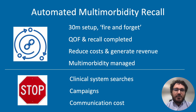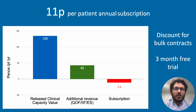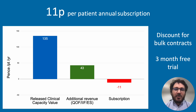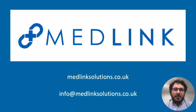All costs are included in the annual subscription. We're pleased to offer the fully integrated Medlink package to all EMIS clients for just 11p per patient annual subscription. Clinical capacity worth many times the cost is released, and that's not even taking into account the admin savings through recall automation. There is significant revenue potential, and our average users have a return on investment of over 13-fold. We offer discounts for bulk contracts, a three-month free trial with no obligation, and a bonus scheme for practice referrals. Please see more detail on our website, or get in touch for more information.